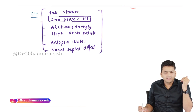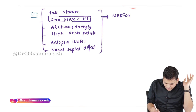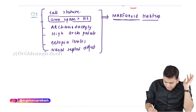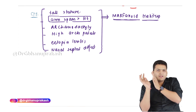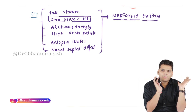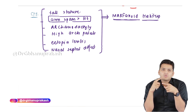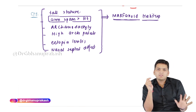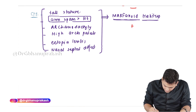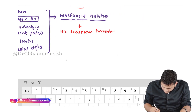All these features can also be seen in Marfan syndrome, so these body features are referred to as marfanoid habitus. If a patient comes to you with marfanoid habitus, you need to differentiate whether it is Marfan syndrome or homocystinemia, because both will have this marfanoid habitus. In hyperhomocystinemia, because of the hypercoagulable state, there will be a history of recurrent thromboembolism.